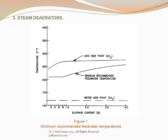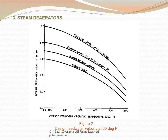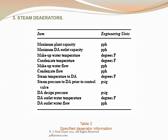Figure one indicates the minimum recommended feed water temperatures, with sulfur content on the horizontal axis and temperature on the vertical axis. Figure two indicates design feed water velocity at 60 degrees Fahrenheit, with average feed water operating temperature on the horizontal axis. Table two indicates specified deaerator information including maximum plant capacity, maximum deaerator outlet capacity, make-up water temperature, condensate temperature, make-up water flow, condensate flow, steam temperature to the deaerator, steam pressure to the deaerator prior to control valve, deaerator design pressure, deaerator outlet water temperature, and deaerator outlet water flow.